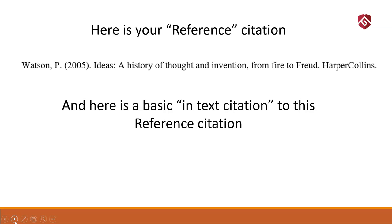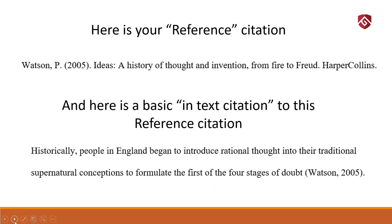Sometimes you'll hear this referred to as parenthetical citation as well. Here's this sentence: 'Historically, people in England began to introduce rational thought into their traditional supernatural conceptions to formulate the first of the four stages of doubt.' Watson, 2005. This sentence is in my own words — I paraphrased it — but I still have to cite where I got this idea, because I didn't go to England to conduct this research. The idea came from Watson. Even though I wrote this in my own words, it's still plagiarism if you don't cite it.